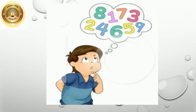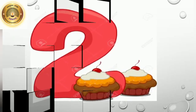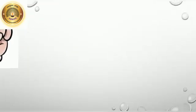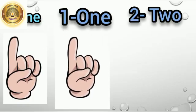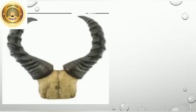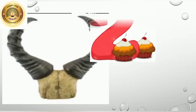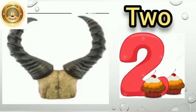What is the next number after one? Number two. One and one make two. See the next picture. What are these? These are horns. And how many horns are here? Here are two horns.